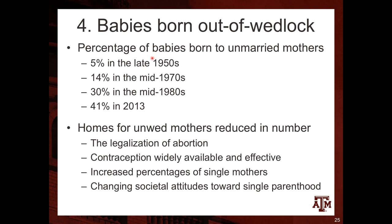In previous decades, women who had babies outside of marriage were not accepted by society — there were even homes for unwed mothers, as those mothers would be ejected from their families. These homes declined in number in more recent decades, related to the legalization of abortion, widely available contraception, an increased percentage of single mothers, and a change in societal attitudes towards single parenthood — it is now more acceptable for women to have children while unmarried.